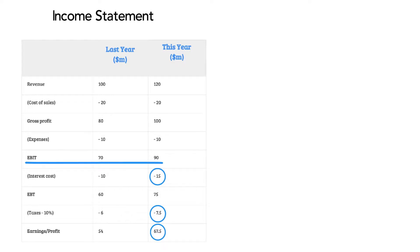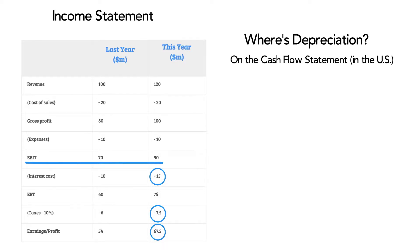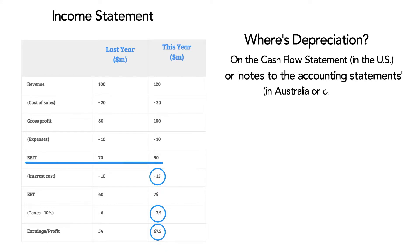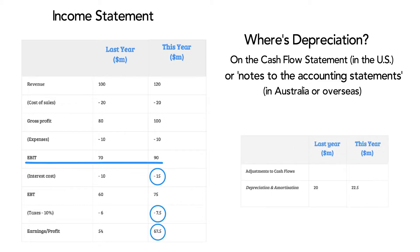To find depreciation and amortization you need to go to the company's cash flow statement, or find it in the notes to the accounting statement if you're in Australia or overseas. You'll find a note that looks like this — it's a reconciliation of profit to cash flow.